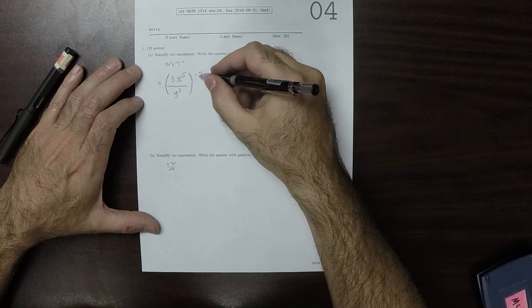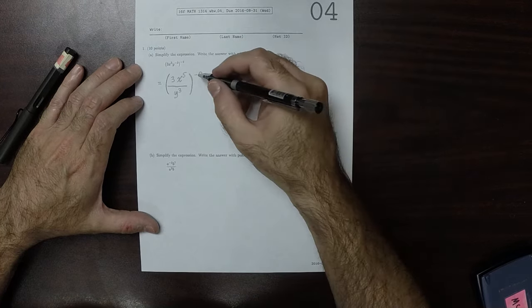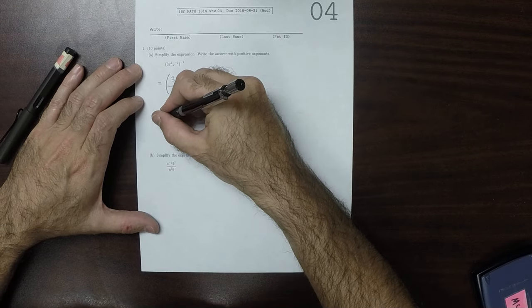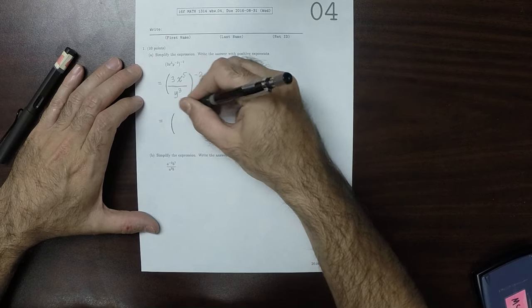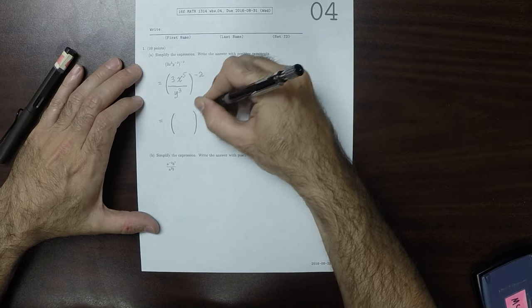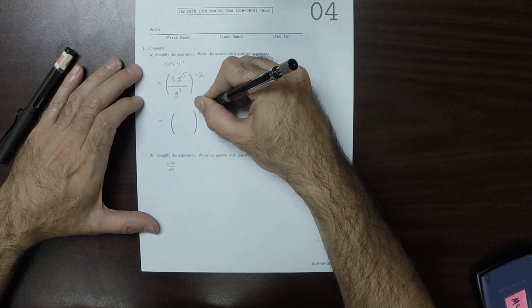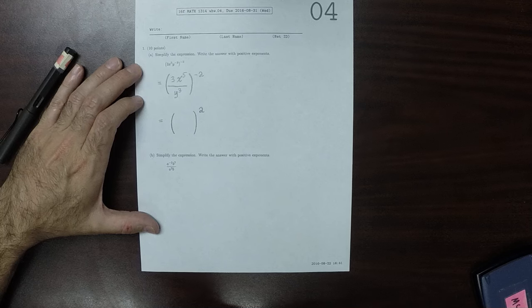So, now we have this negative exponent. I'll get rid of that negative exponent. So, what I want is something that goes in here, something that goes in there.